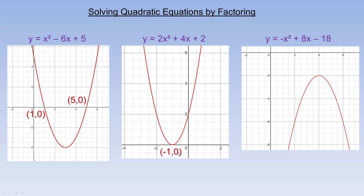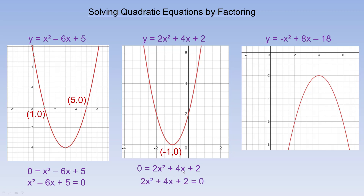Since y is 0, what we do to find the x-intercepts is put 0 in place of y. So it's 0 equals x squared minus 6x plus 5, or x squared minus 6x plus 5 equals 0 — you can say either of those. For the next one, we would again put 0 in place of y, and the formula we normally work with is 2x squared plus 4x plus 2 equals 0, with the 0 on the right side.